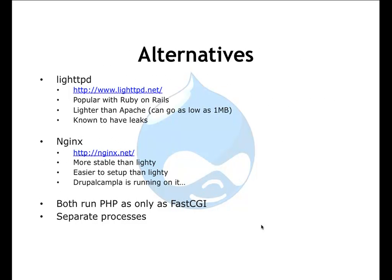Alternative servers: LightTPD, which is or used to be popular with Ruby on Rails, is much lighter than Apache — processes as low as one megabyte — but it's known to have leaks. A strong alternative would be Nginx, which is much more stable than Lighty, easier to set up. Drupal Camp LA was running it last year. In both LightTPD and Nginx, PHP is run only as FastCGI, which runs as separate processes.